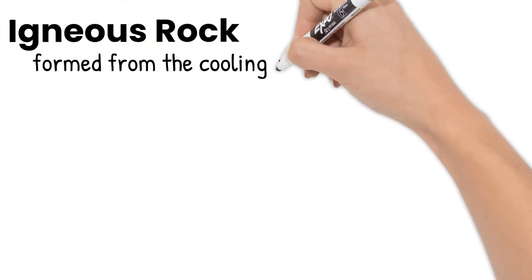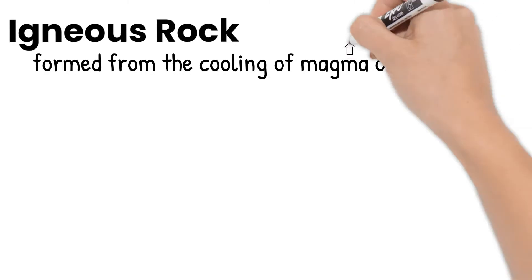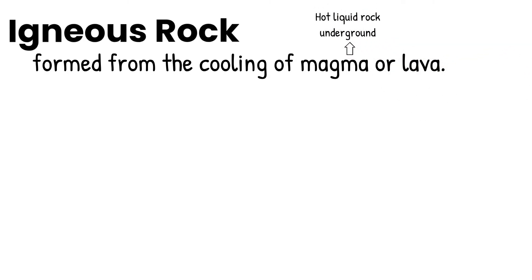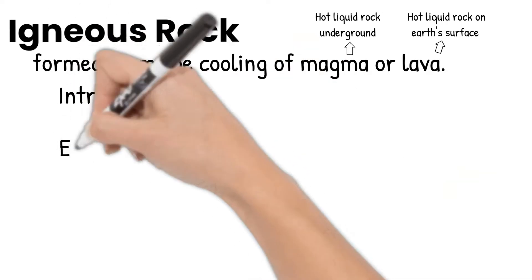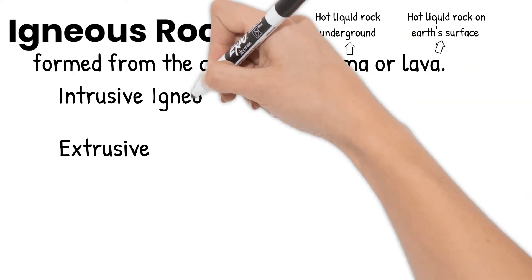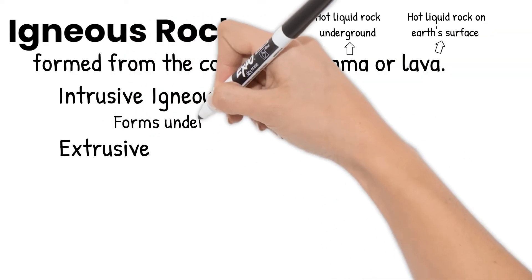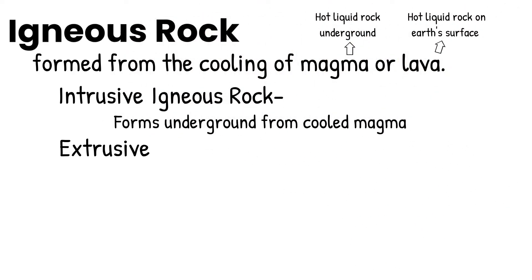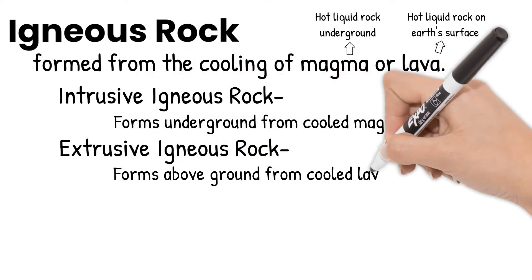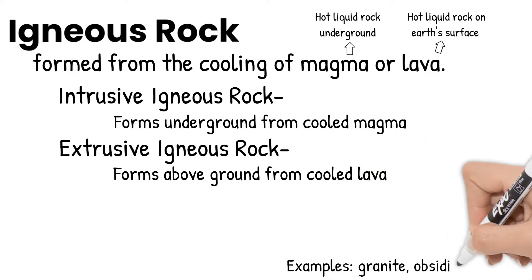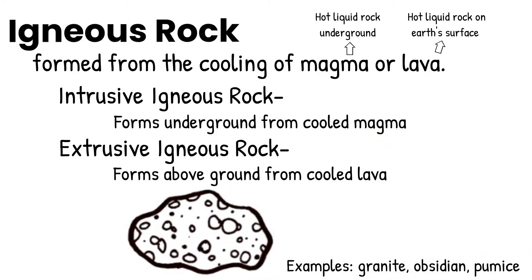Next, igneous rocks are formed by the cooling of magma or lava. Magma is hot liquid rock underground. When it reaches the earth's surface, it is then called lava. Igneous rocks can be categorized as either intrusive or extrusive. Intrusive igneous rock forms underground from magma that has cooled. Extrusive igneous rock forms above ground from the cooled lava. Granite, obsidian, and pumice are examples of igneous rocks.